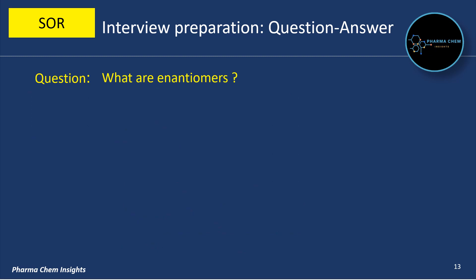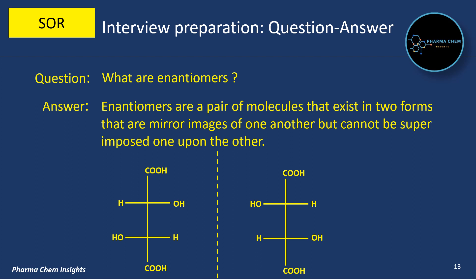What are enantiomers? Enantiomers are a pair of molecules that exist in two forms that are mirror images of one another but cannot be superimposed one upon the other. You can see the example of tartaric acid, in which the two enantiomers are mirror images of each other but cannot be superimposed.